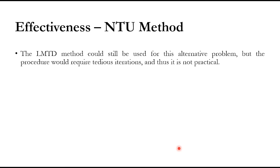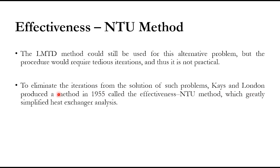The LMTD method could also be used for this same task — when outlet temperatures and heat transfer rate are unknown but the heat transfer area is given — but it requires tedious iterations, making it complex and impractical. To reduce these iterations, Kays and London produced a method in 1955 called the Effectiveness-NTU method, which greatly simplified heat exchanger analysis. As researchers and scientists we always prefer simplified analysis, since complex methods increase the chance of errors.